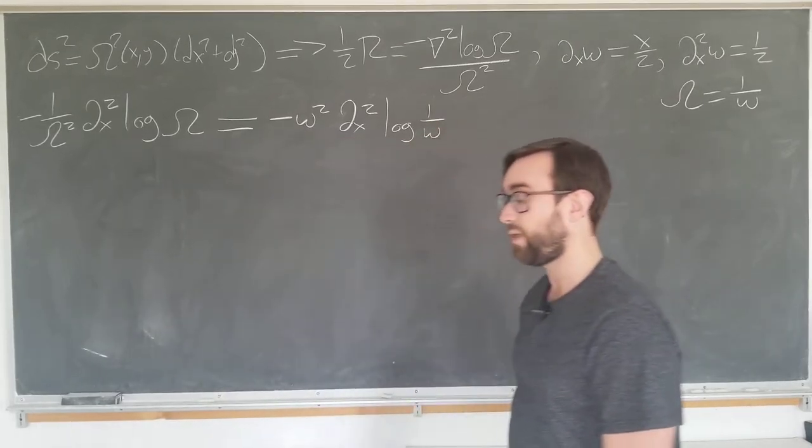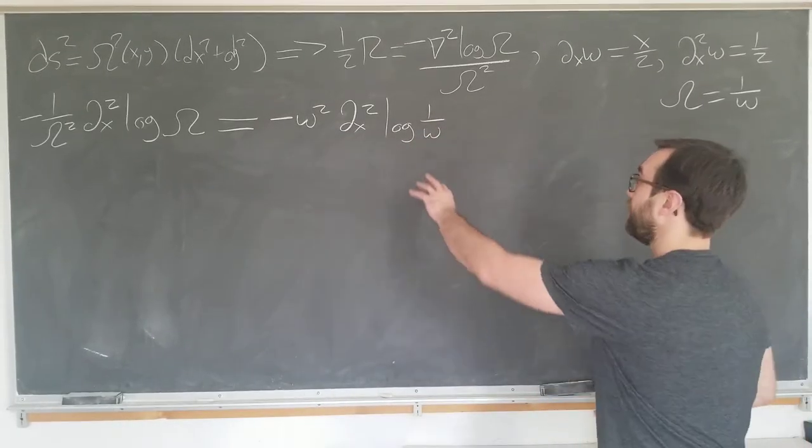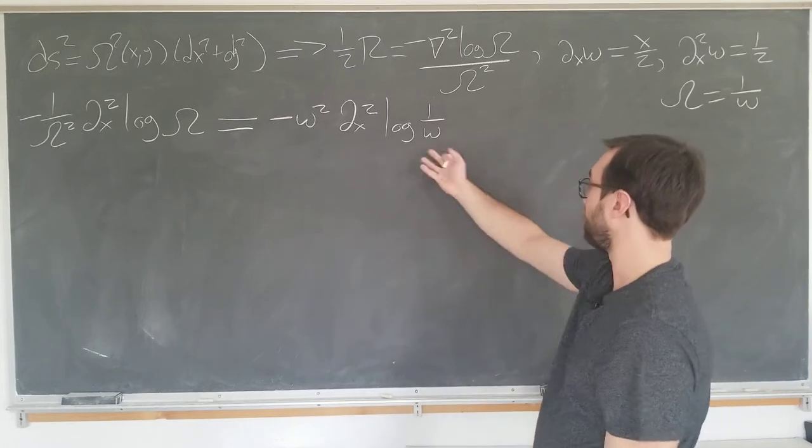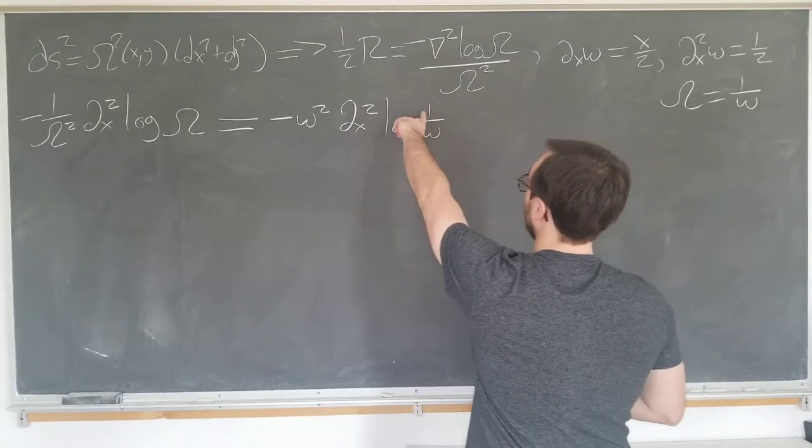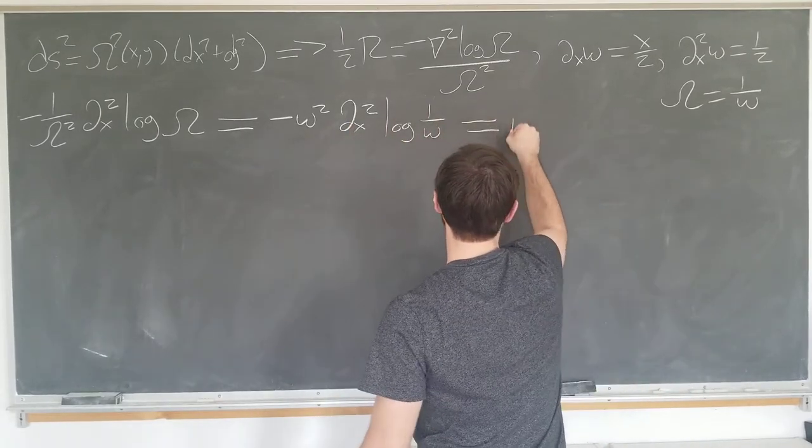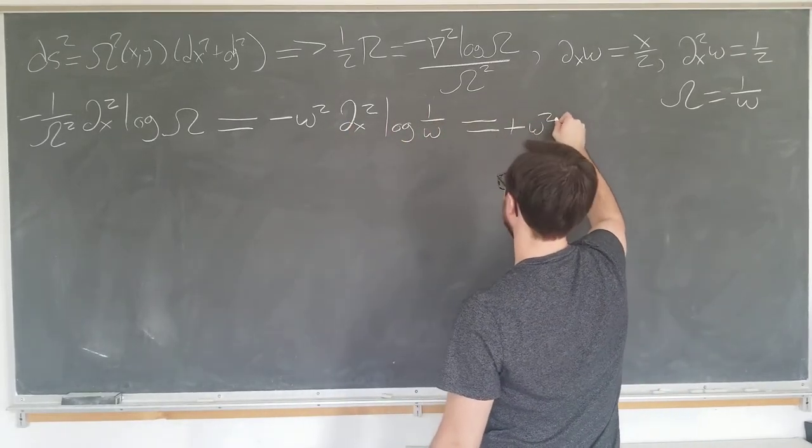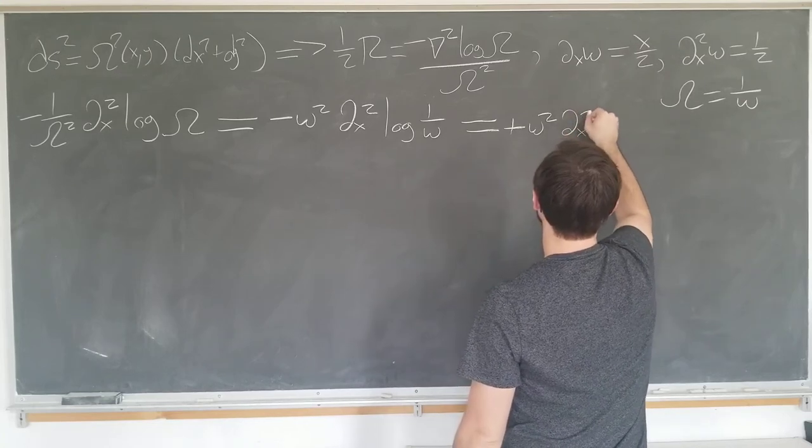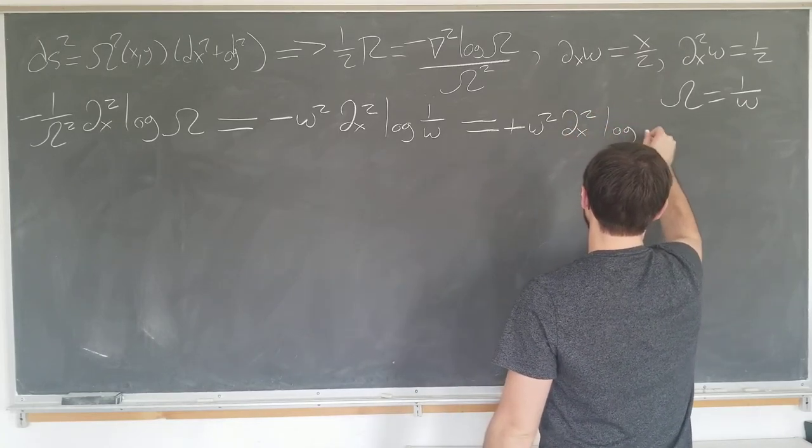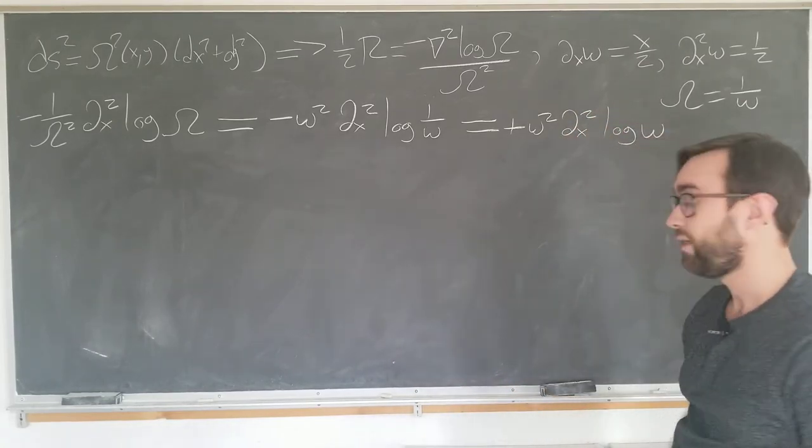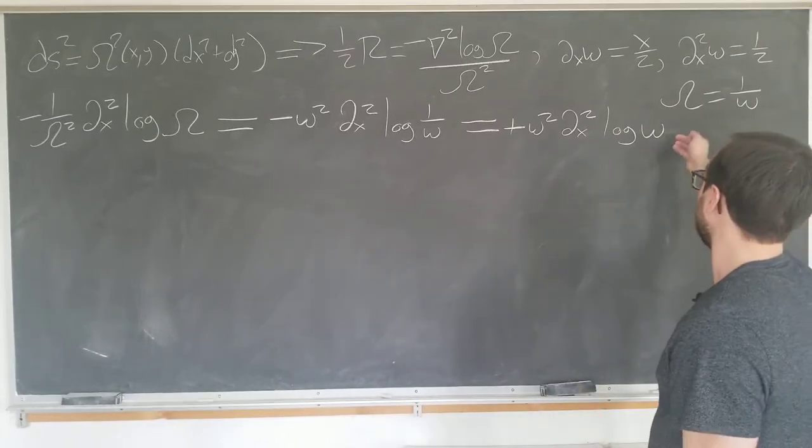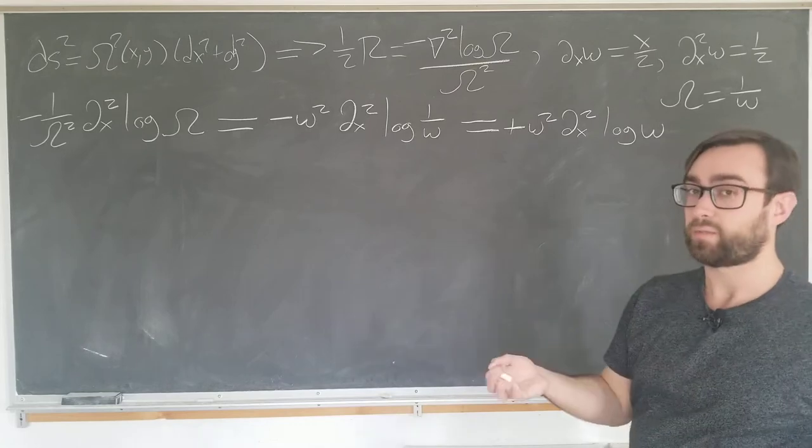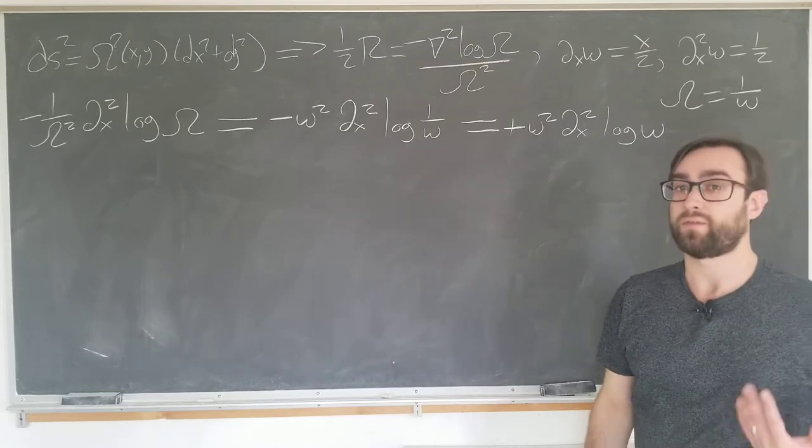And you're going to see shortly why I decided to introduce the little omega. Because we can use the properties of logarithms to simplify this further. You can simply take the reciprocal outside as a minus sign, and it becomes plus omega squared d x squared log of omega. This is much more straightforward than if you did not define the small omega. It would just become much messier.